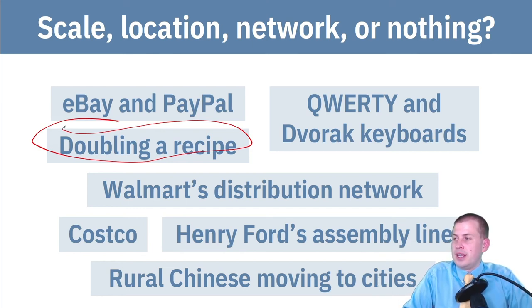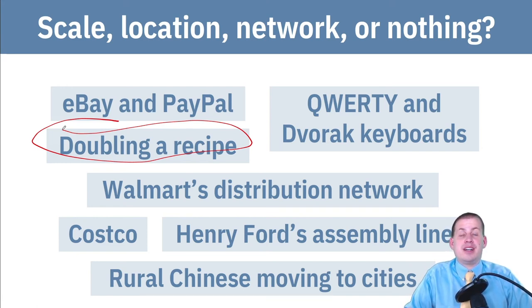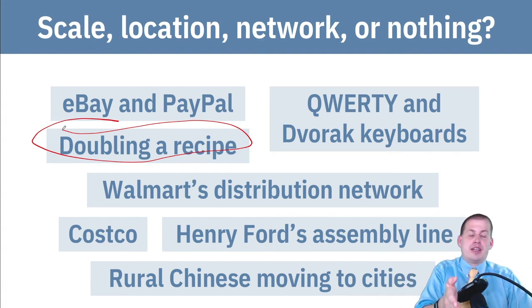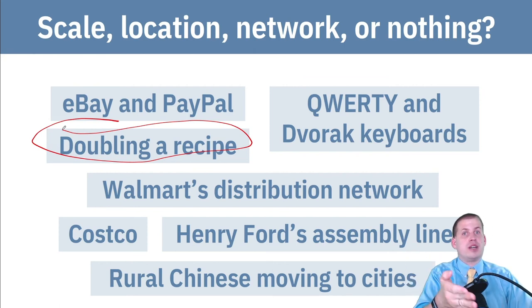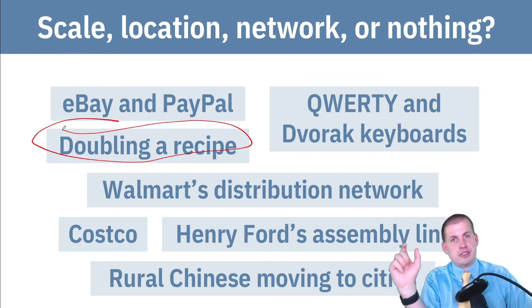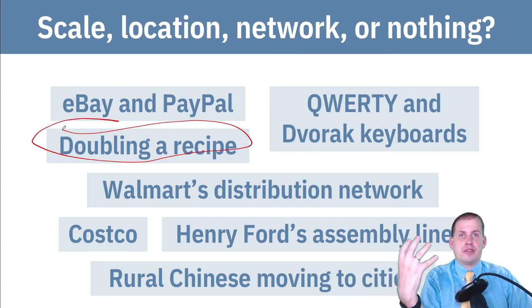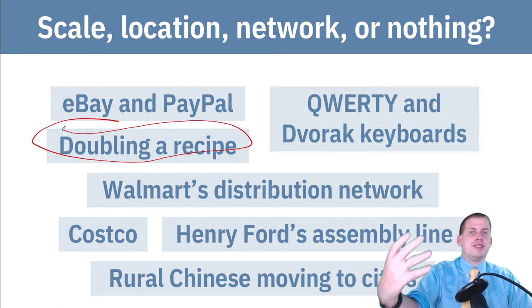You could have diseconomies of scale if you tried to multiply a recipe by a hundred and you're only one person — that's actually going to slow you down because it takes a lot longer to mix everything, you'd need multiple bowls, and you'd need a second or third oven. But if you're just going from one to two or tripling it, it actually has economies of scale and speeds up the amount of stuff you create in the same amount of time.